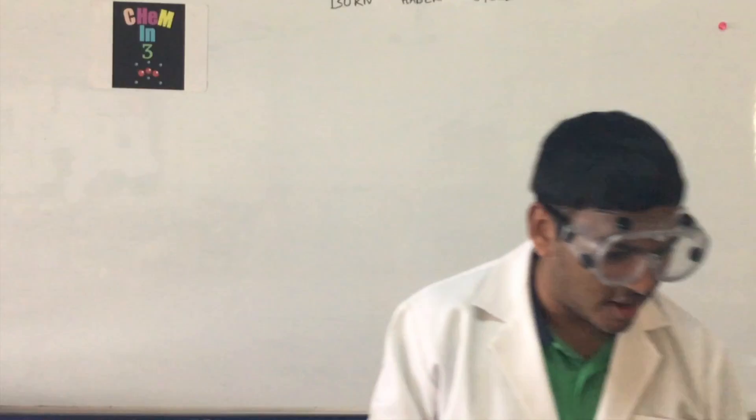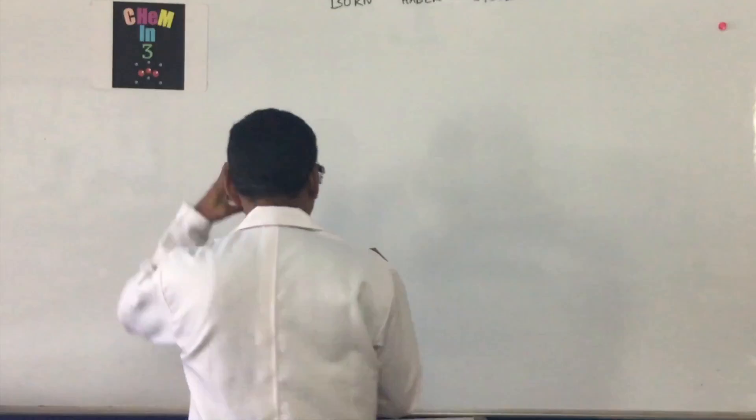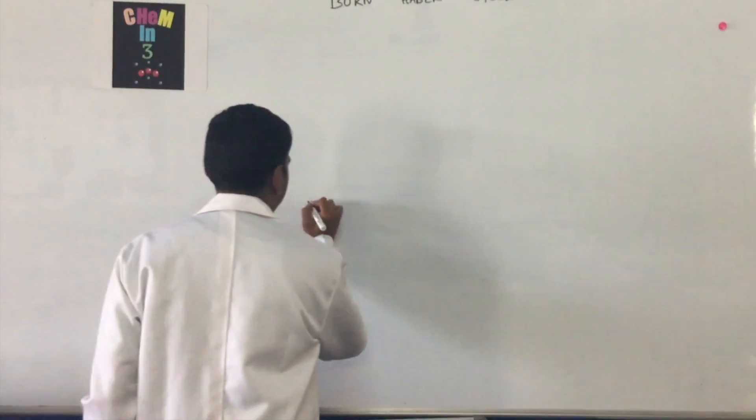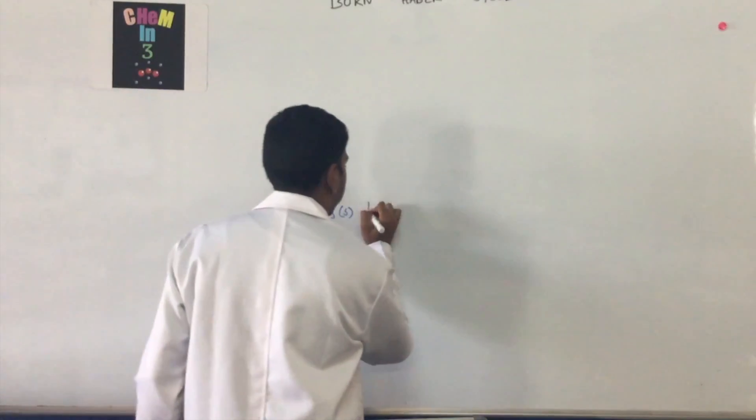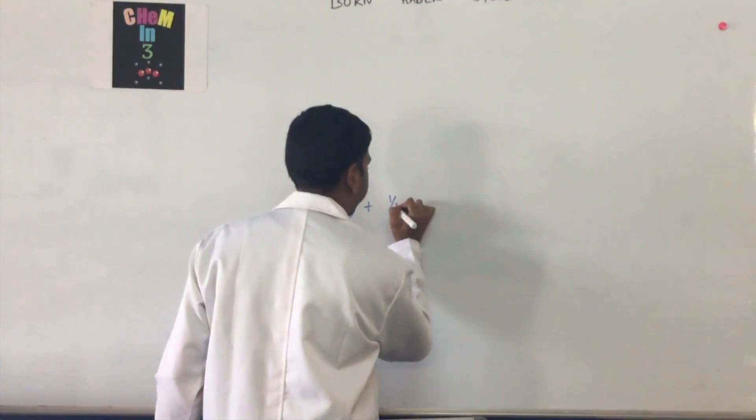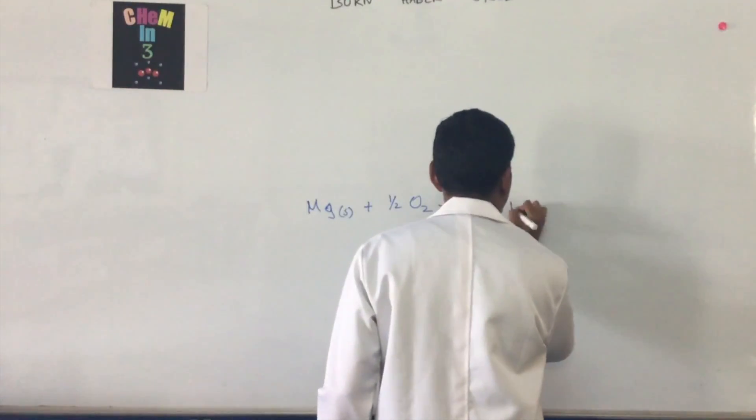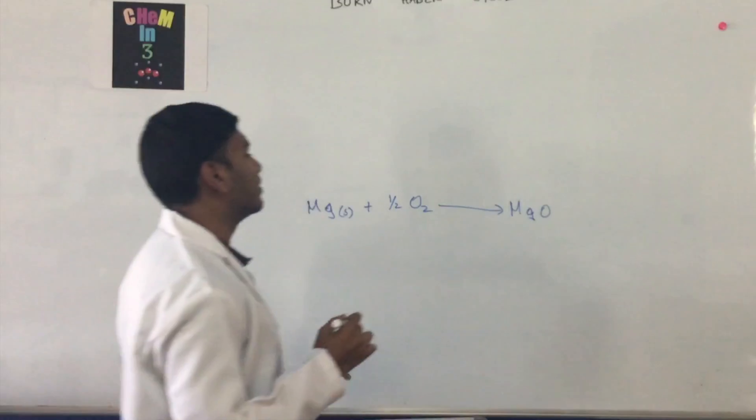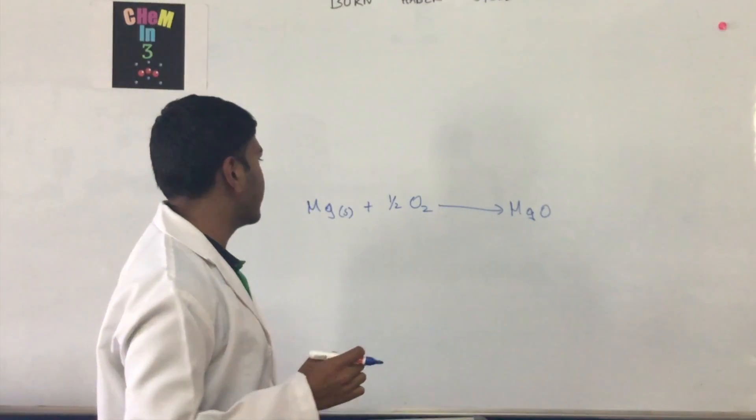And that's just how exothermic the reaction is. The reaction is usually written by students as Mg in its solid state plus half of oxygen which gives MgO. This is the usual form that is written.